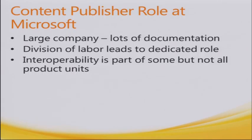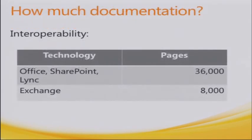I'm a content publisher at Microsoft, and that's a role that not all companies have. Because Microsoft is a large company, we have a lot of documentation and a dedicated role for that. That allows developers to develop, testers to test, and us to create the content so that it's consistent and usable. Interoperability content is a very specific type of content — these open specifications — that differs from most of our other content, particularly in form and style. Office, SharePoint, and Lync have 36,000 pages of open specifications, and Exchange has 8,000 pages.